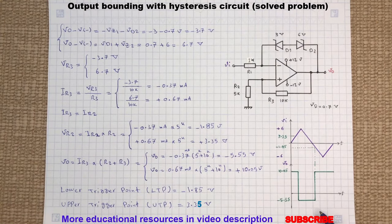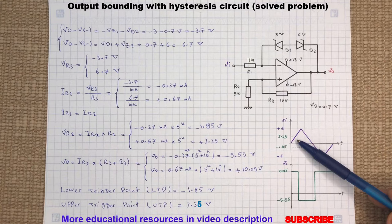And here is the output voltage versus input trigger signal. As you can see in this diagram, 3.35 volts is the upper limit point and minus 1.85 is the lower limit point.